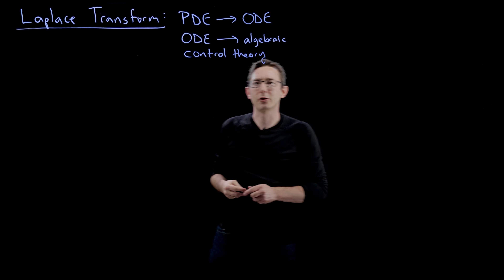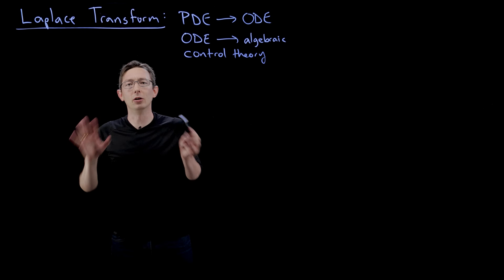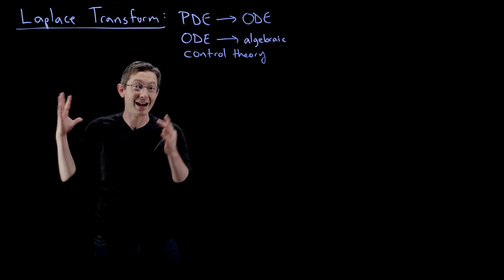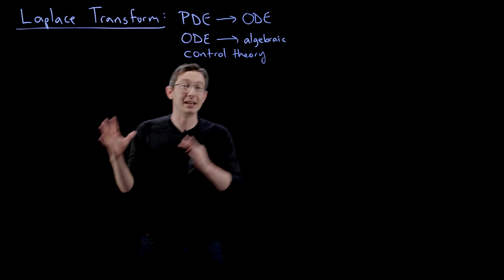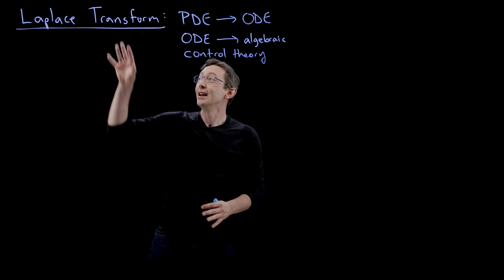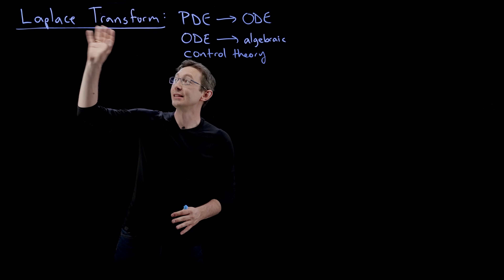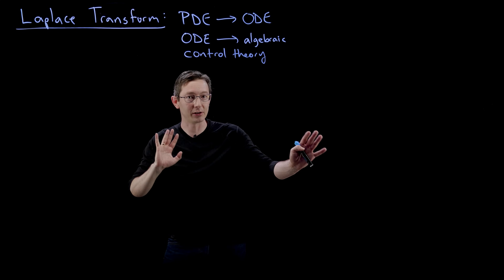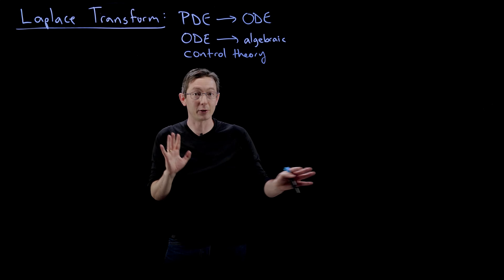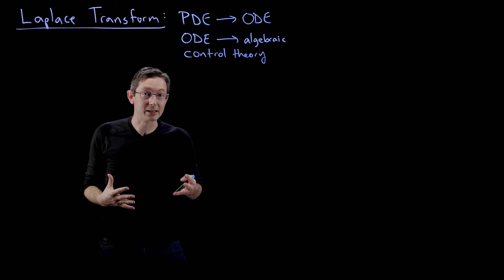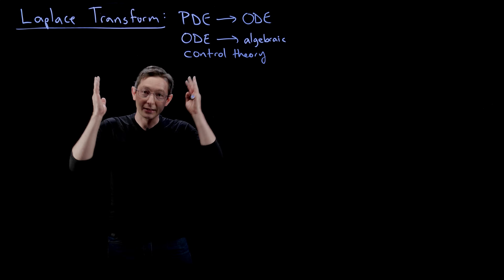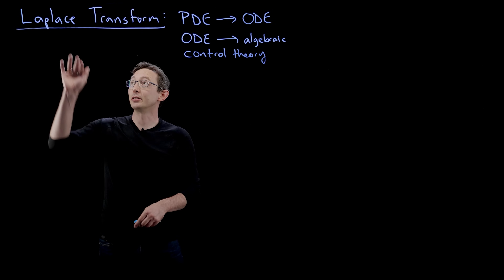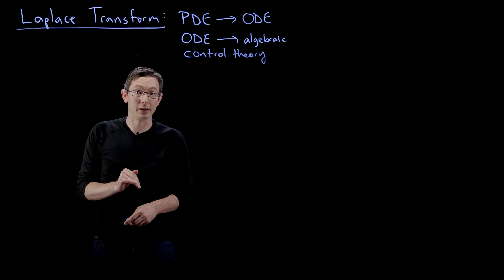The Laplace transform is also extremely useful in control theory. It's going to crop up all over the place, and today I'm going to derive it for you and show you how it's not actually separate from the Fourier transform — it is in some sense a generalized Fourier transform. Many of you have seen both transforms for years and noticed similarities; today I'm going to show you how they are exactly the same thing, with the Laplace transform coming directly from the Fourier transform.